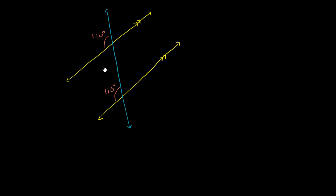Now we also know that vertical angles are equivalent. So if this is 110 degrees, then this angle right over here on the opposite side of the intersection is also going to be 110 degrees. And we could use that same logic right over here to say that if this is 110 degrees, then this is also 110 degrees.